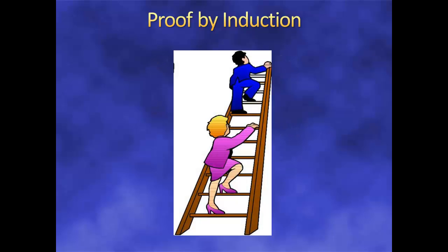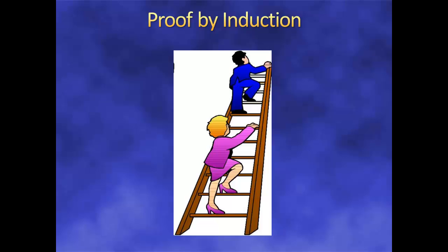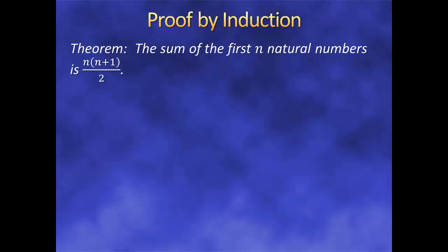Think of it like learning how to climb a ladder. Really, there are only two things you need to know: first, you need to know how to get on the first rung of the ladder; then you need to know how to go from one rung to the next rung. Once you know both of these things, you can climb any ladder, no matter how tall. Let's look at an example. Let's say that we want to prove that the sum of the first n natural numbers is n(n+1)/2. This is a perfect example of something that can be proven by induction. First, let's see if the formula is true when n = 1. This is called the base step. Plugging 1 into our formula, we get 1×2/2 = 1, as we expected.